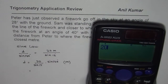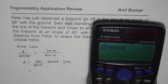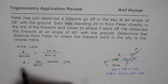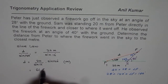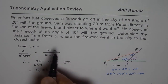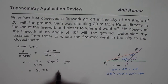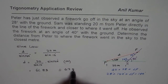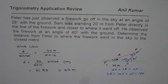We calculate 20 times sine of 140 degrees, divided by sine of 12 degrees, which equals approximately 61.83. Rounding to the closest meter, the distance from Peter to the firework is 62 meters. That is how you solve this question. I hope that helps — thank you and all the best.